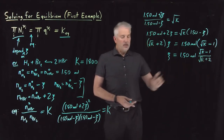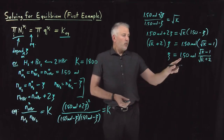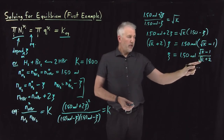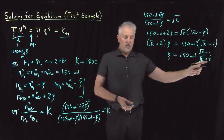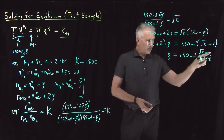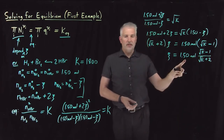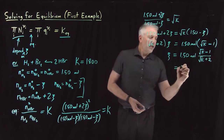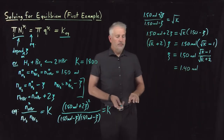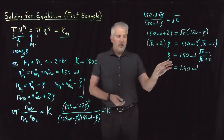Now plugging in K = 1,800: ξ = 1.5 moles × (√1800 − 1) / (√1800 + 2). That ratio of square roots works out to about 0.93. So taking 93% of 1.5 moles gives approximately 1.4 moles. The algebra is done — I've solved for squiggle, the extent of reaction.